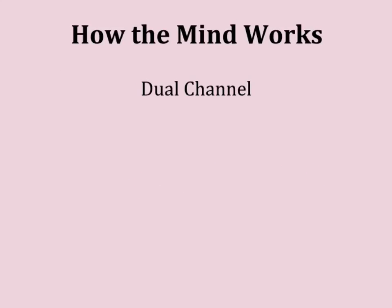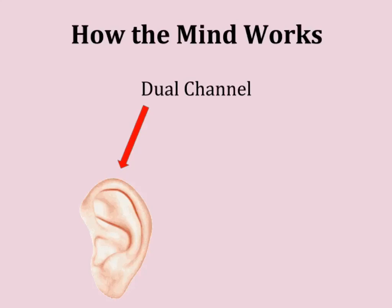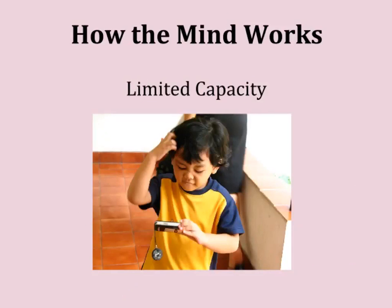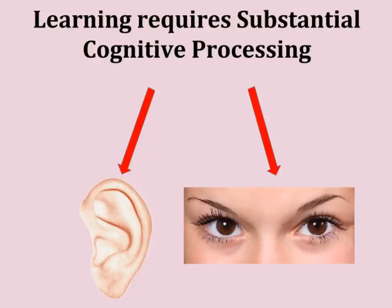Let's think about this a little more and talk about how the mind works. Humans have two separate channels — a dual channel — in their brain to process information. One is to process verbal material, or the things that you hear, and the other is to process visual material, or the things that you see. The problem is there is only a limited amount of processing capacity available in these verbal and visual channels. For learning to occur, we require substantial cognitive processing in both channels — in other words, a lot is going on in your brain as you take things in through your eyes and through your ears.